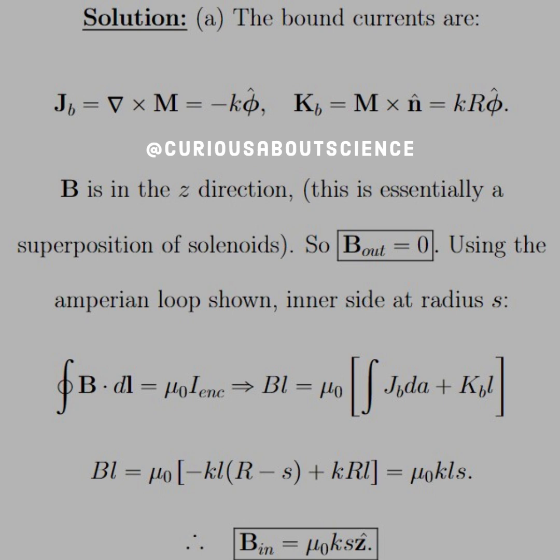we see that B dot DL is equal to mu knot I enclosed. So BL is equal to mu knot times the integral of JB dA plus the integral of KB dL, which goes to KBL. After you integrate out for the bound currents, we see that BL is equal to mu knot KLS. The Ls cancel. So B inside is equal to mu knot KS Z hat. Just be careful of simplifying the integrals for the I enclosed.